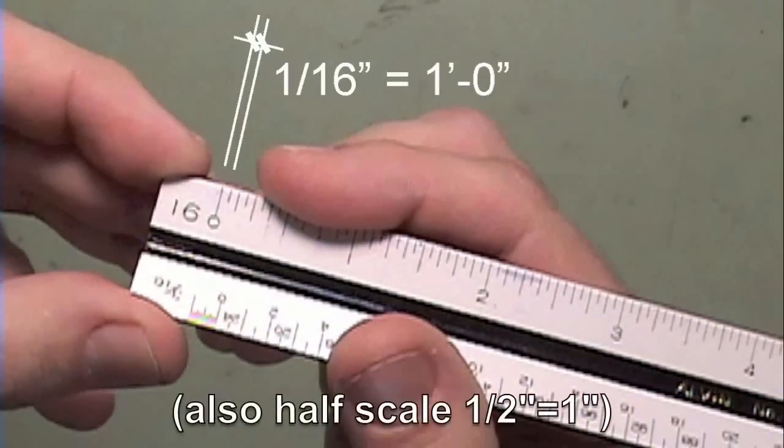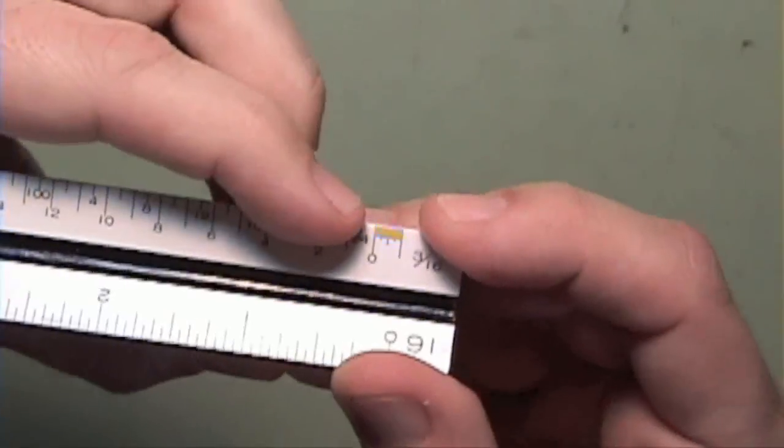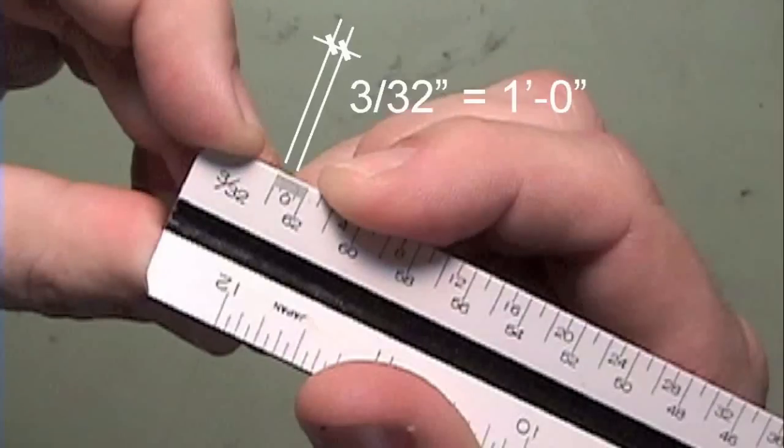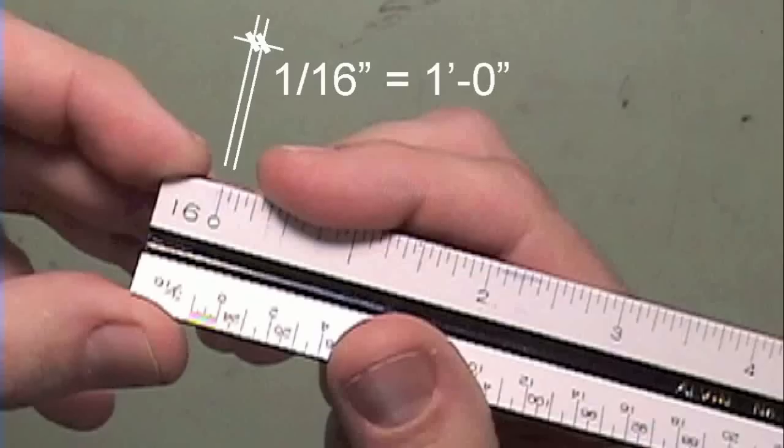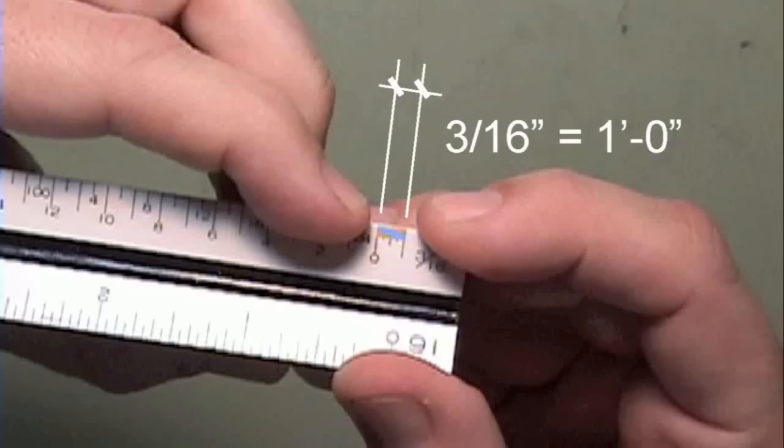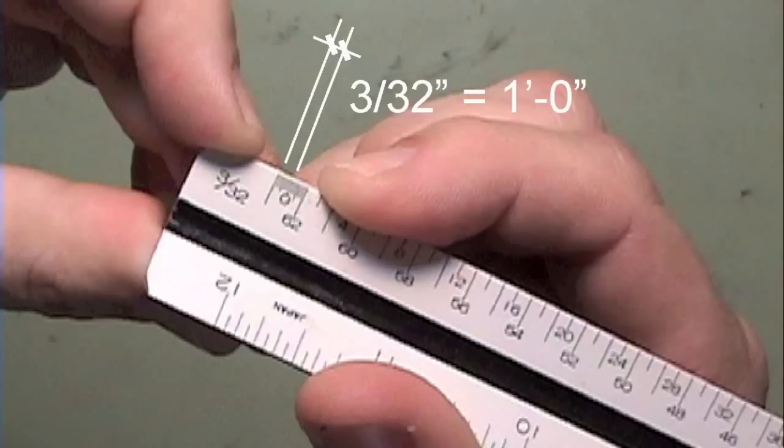This side shows inches, which is also called full scale. It can also be used as a 1/16th scale, as well as a 3/16th and 3/32 scale. That means that 1/16th of an inch, 3/16th of an inch, and 3/32 of an inch equal 1 foot 0 inches.